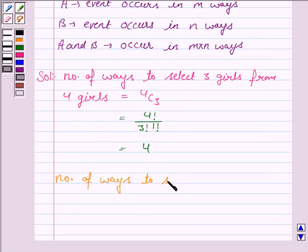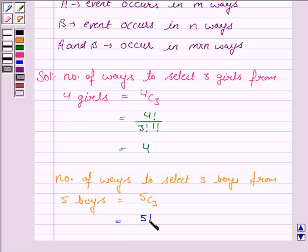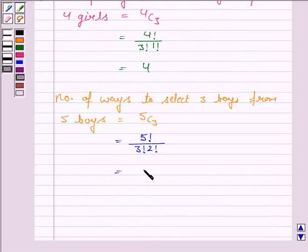And the number of ways to select 3 boys from 5 boys is equal to 5C3, which is equal to 5 factorial upon 3 factorial into 2 factorial. Now, 5 factorial can be written as 5 into 4 into 3 factorial upon 3 factorial into 2 factorial. Now, 3 factorial gets cancelled with 3 factorial and 2 into 2 is 4, and it is equal to 5 into 2, that is 10.